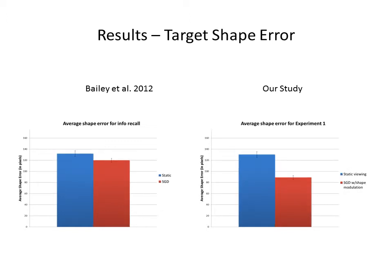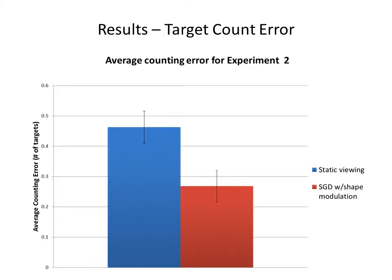For shape error, SGD with shape modulation shows that the gaze-guided group had significantly lower shape error than that of the static viewing group. However, in the previous study by Bailey et al., no significant difference was observed in shape error between SGD and a static group. For experiment 2, the gaze-guided group performed significantly better than a control group on count, location, and shape error. The target locations for the gaze-guided group were automatically predicted by our framework.